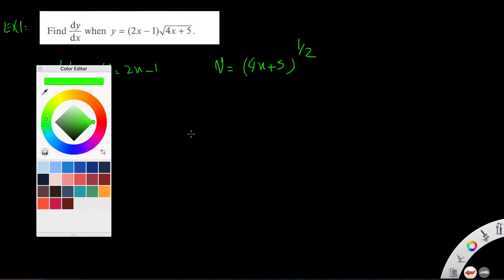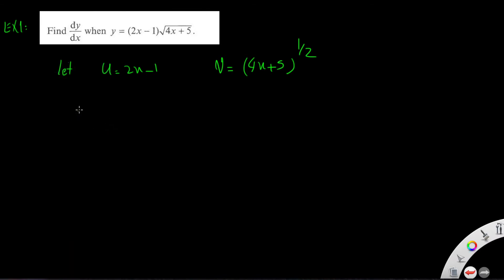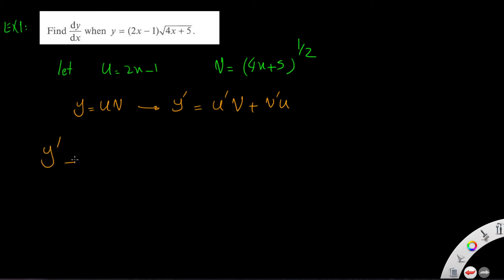Writing the product rule: y equals uv, then differentiation is u prime v plus v prime u. So dy/dx equals u prime, which is the differentiation of u giving 2, times the original function v, which is (4x plus 5) to the power of one half.